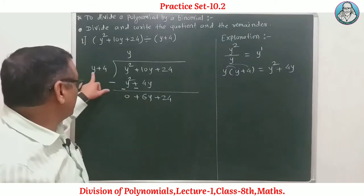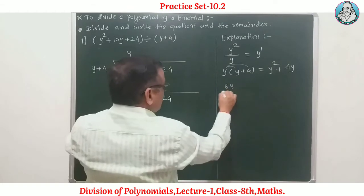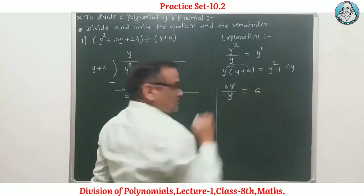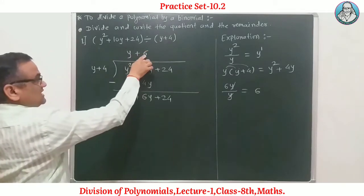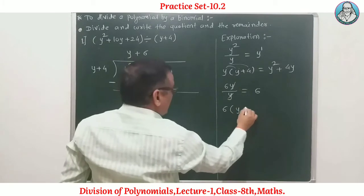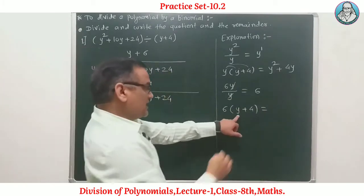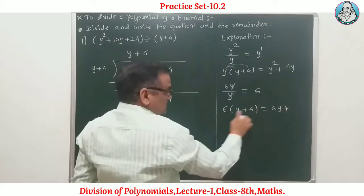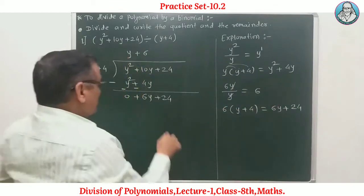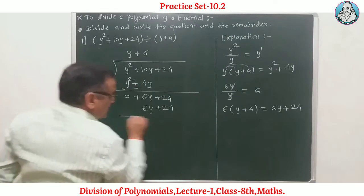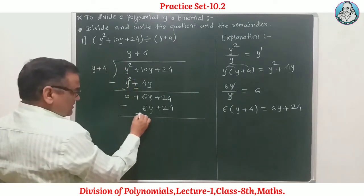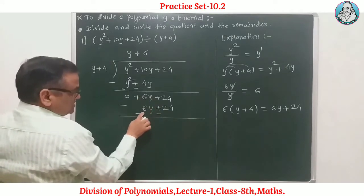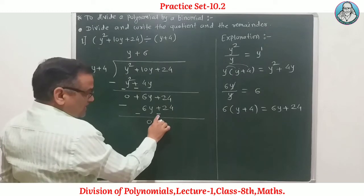Now divide 6y by y — y cancels, giving 6. So 6 is the next term of the quotient. Multiply 6 by (y + 4): 6 × y = 6y and 6 × 4 = 24, giving 6y + 24. Perform subtraction: 6y + 24 minus 6y + 24 equals 0. The remainder is 0.